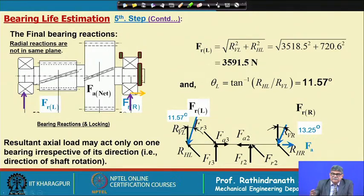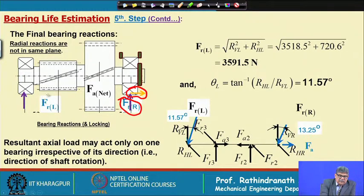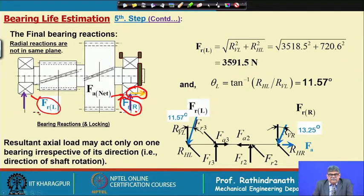At the right hand bearing, both the resultant radial load and the resultant axial load are acting, whereas on the left hand bearing only the resultant radial load is acting. Therefore, to calculate the life of these bearings: for the right hand bearing we consider both radial and axial load, and for the left hand bearing we consider only the resultant radial load with no axial load. There are several methods to discuss about the locking of a bearing.